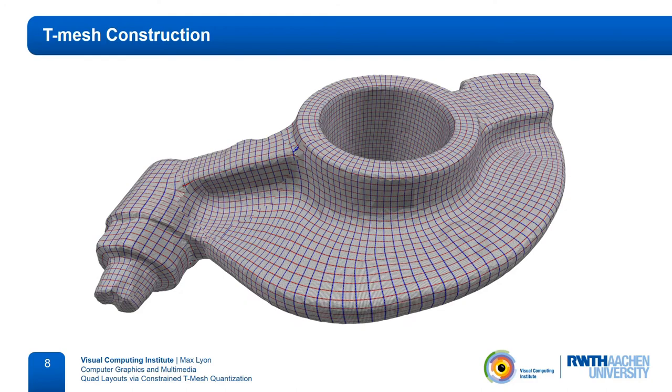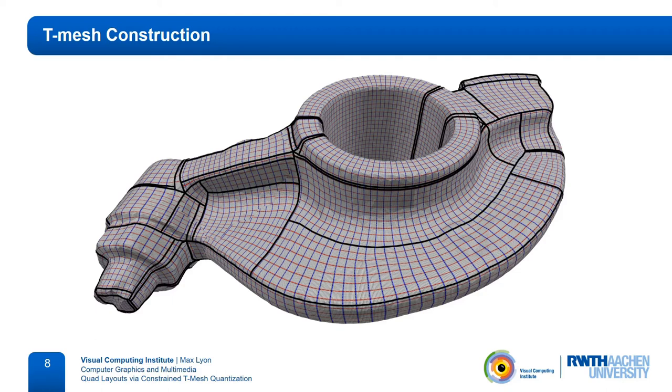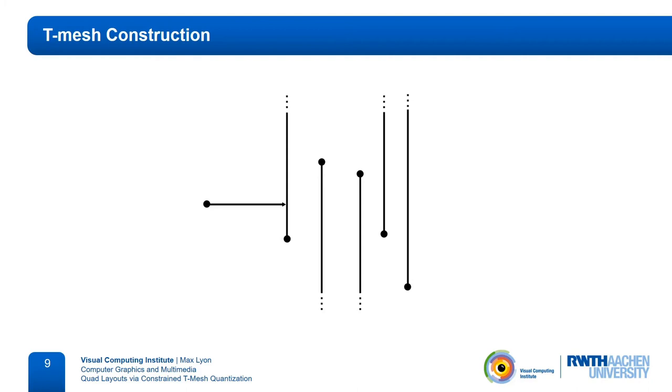As already mentioned in the introduction, the t-mesh is constructed by tracing a motorcycle graph inside a given seamless parameterization by starting motorcycles at each layout vertex in all axis directions. In standard motorcycle graphs, the motorcycles are stopped at the first intersection with a trace of another motorcycle. The resulting graph is simple in the sense that it consists of few elements. However, this also makes it more difficult to argue about paths that connect singularities. So in order to make our lives easier later when we set up constraints, we create a slightly more complex t-mesh by tracing further than just the first intersection.